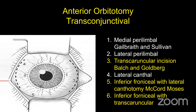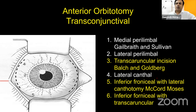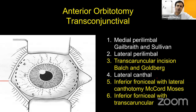That was the confusing theoretical part — but most of orbital surgery is common sense. You don't really have to memorize the names of incisions, though knowing them earns brownie points at conferences. What you see on CT and MRI, combined with what you palpate, guides your incision choice. The medial perilimbal incision is named Galbraith and Sullivan, the transcanalicular incision Valken-Goldberg, the inferior fornicial with lateral canthotomy is Macadmosis.